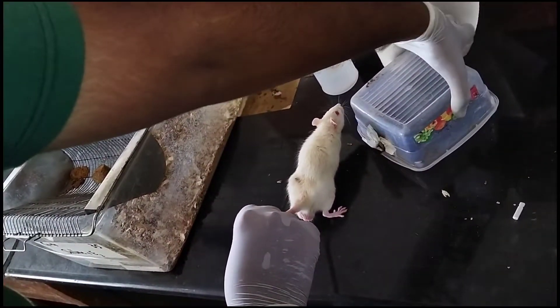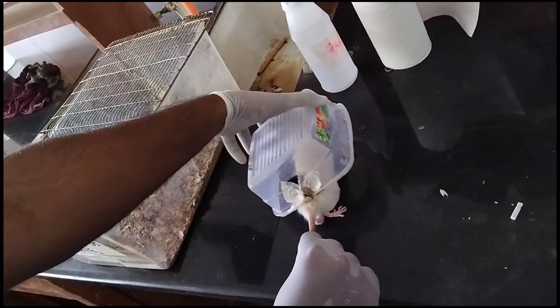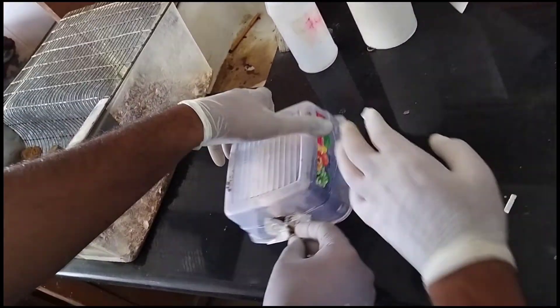Take the rat out of the cage, then put the box over the rat gently, making sure it won't hurt him.